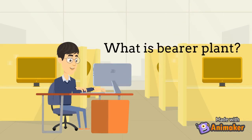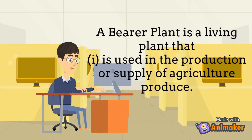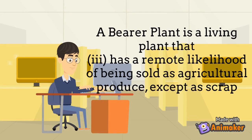Next, we need to understand the term bearer plant. A bearer plant is a living plant that: first, is used in the production or supply of agricultural produce; second, is expected to bear produce for more than one period; and third, has a remote likelihood of being sold as agricultural produce.